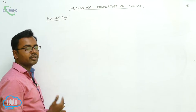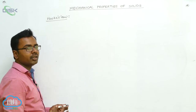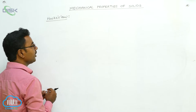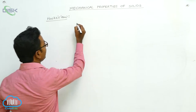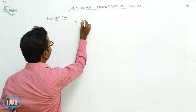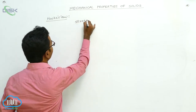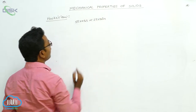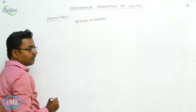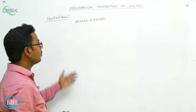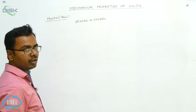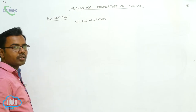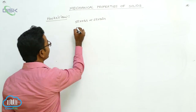Within the elastic limit, stress is directly proportional to strain — as we increase stress, strain also increases, but only within the elastic limit of the body. So the relation between stress and strain according to Hooke's law is: stress is proportional to strain.